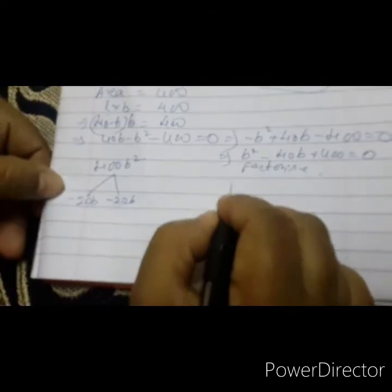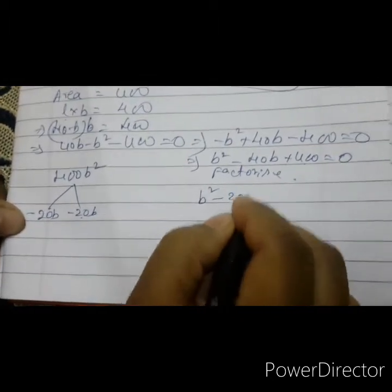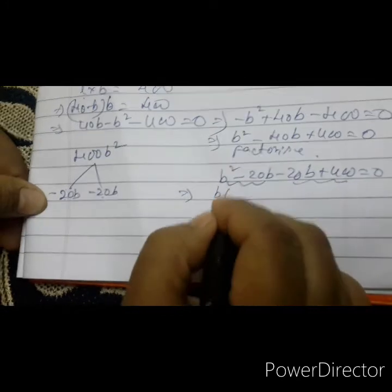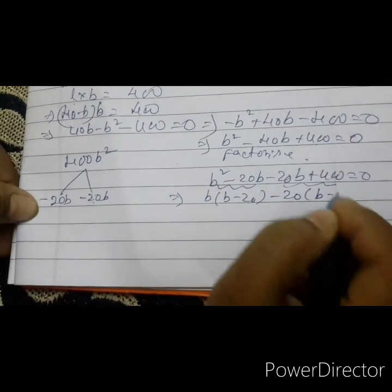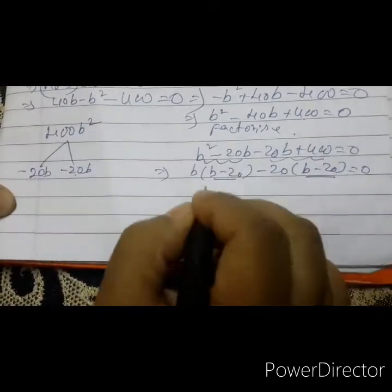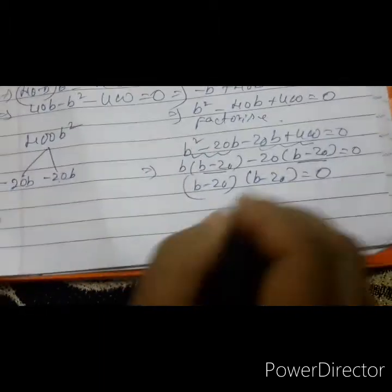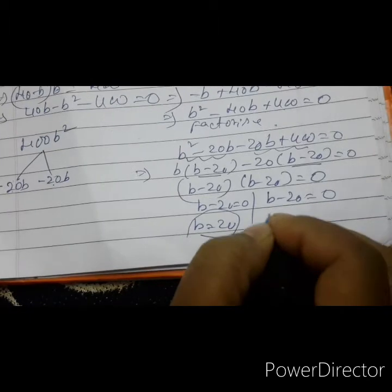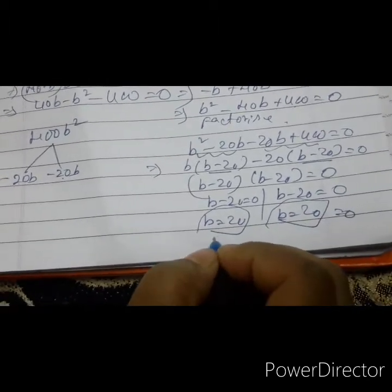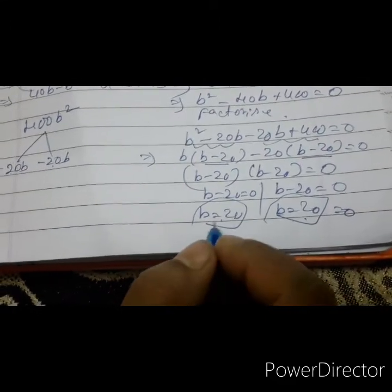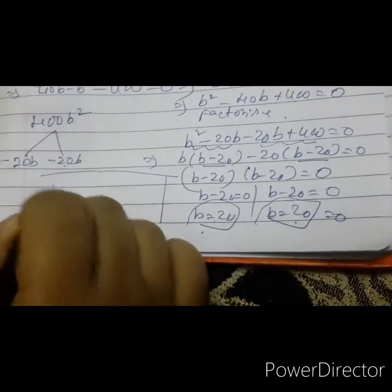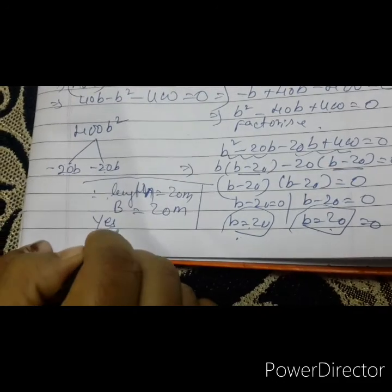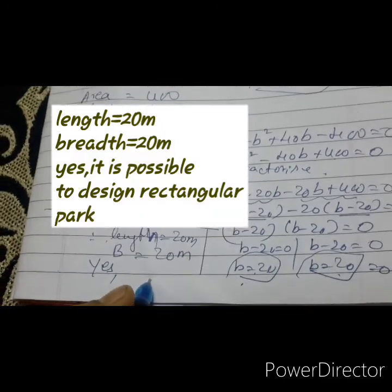Substituting: B squared minus 20B minus 20B plus 400 equals 0. B is common from first two and last two: B(B minus 20) minus 20(B minus 20) equals 0. So (B minus 20)(B minus 20) equals 0. Therefore B minus 20 equals 0 and B equals 20. Both roots give breadth equals 20 metre, so length also equals 20 metre. Therefore length equals 20 metre and breadth equals 20 metre. Yes, it is possible to design a rectangular park. Thank you.